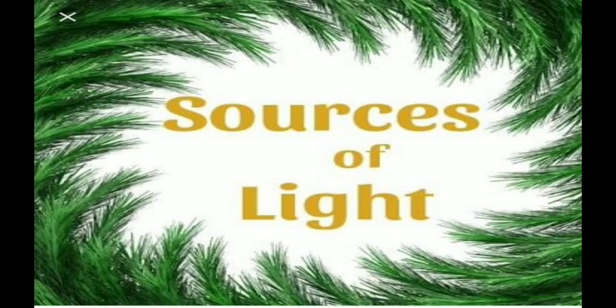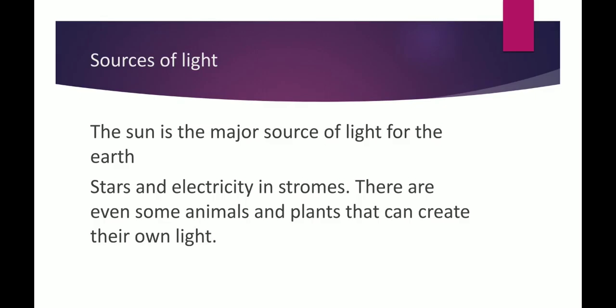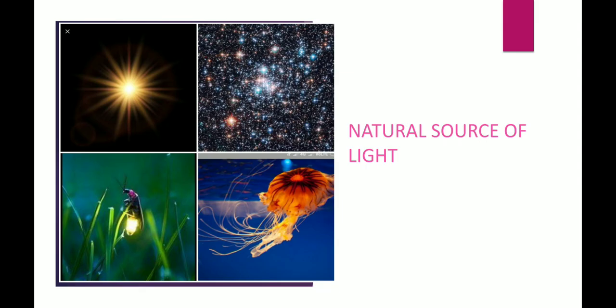Sources of light. There are two types of sources of light. One, natural source of light and second, artificial source of light. What are natural sources of light? The objects or things which emit light of their own are called natural source of light. The sun is the major source of light for the earth. The stars and electricity in storms. There are even some animals and plants that can create their own light. You can observe in the picture, sun, stars, jellyfish, firefly are the examples for natural source of light which emit light of their own.